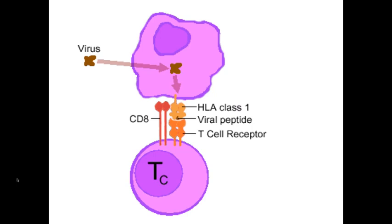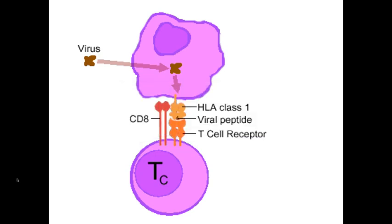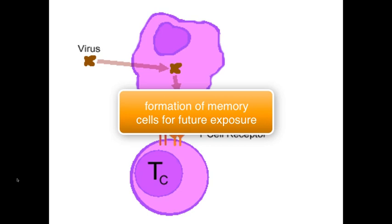Once this interaction has occurred and the T cell is fully aware of the danger, the cytotoxic T cell will start to express a chemical messenger called interleukin-2 and also its receptor, then release it in an autocrine fashion — meaning it will stimulate itself to increase in numbers. You will then have many activated cytotoxic T cells that are specific in killing the cell that poses a potential harm to the body, resulting in something called clonal expansion. In this clonal expansion you will also find some memory cells that will remember this harmful cell for future occasions.